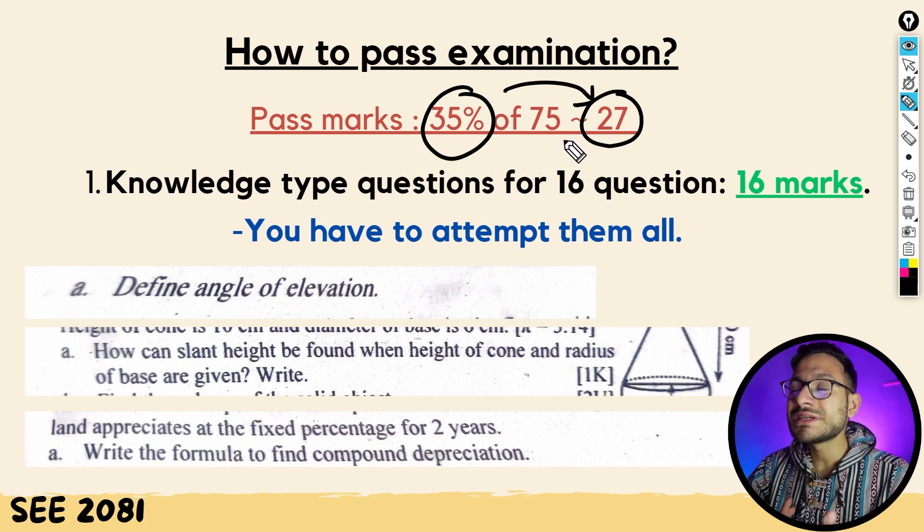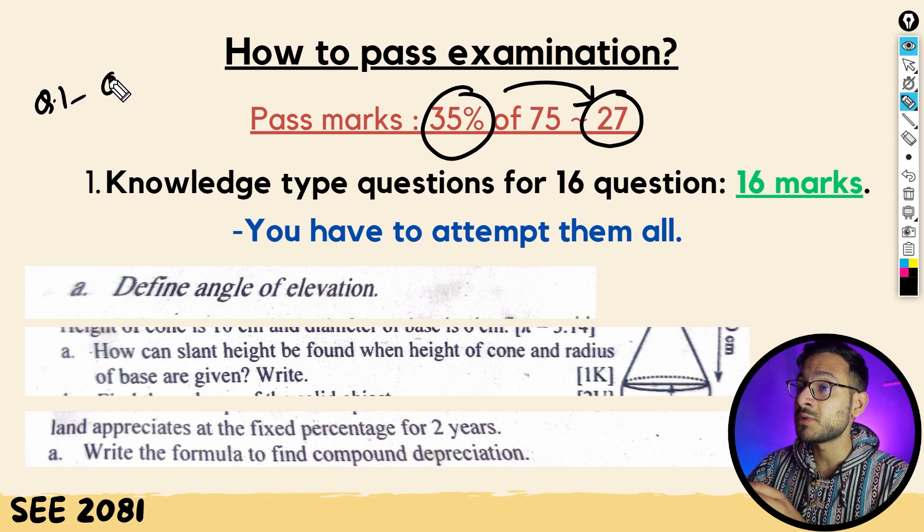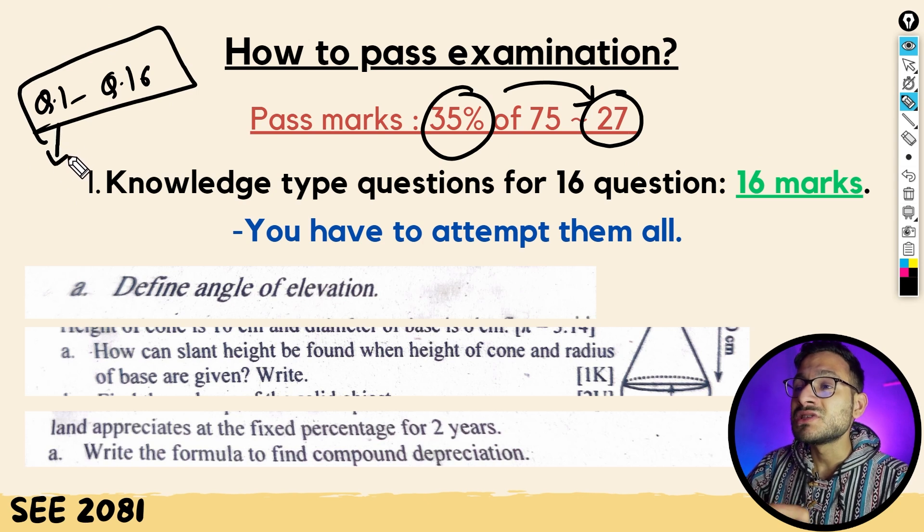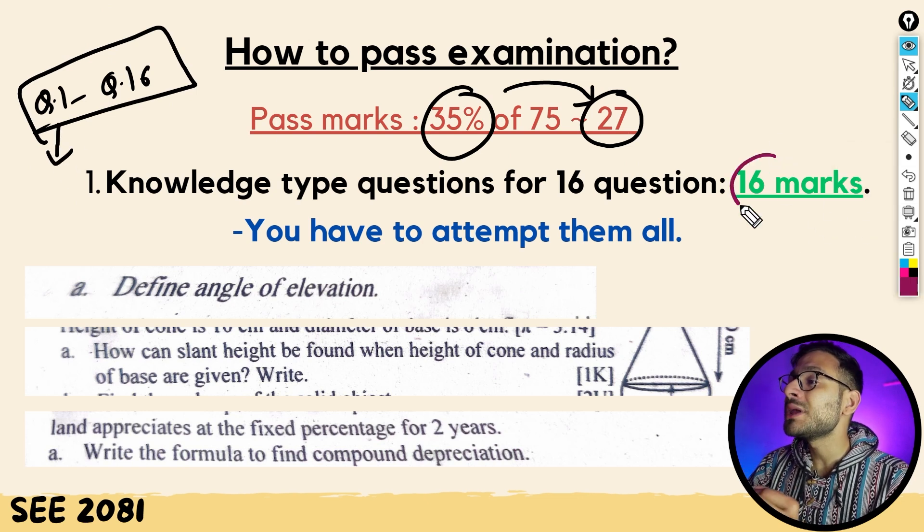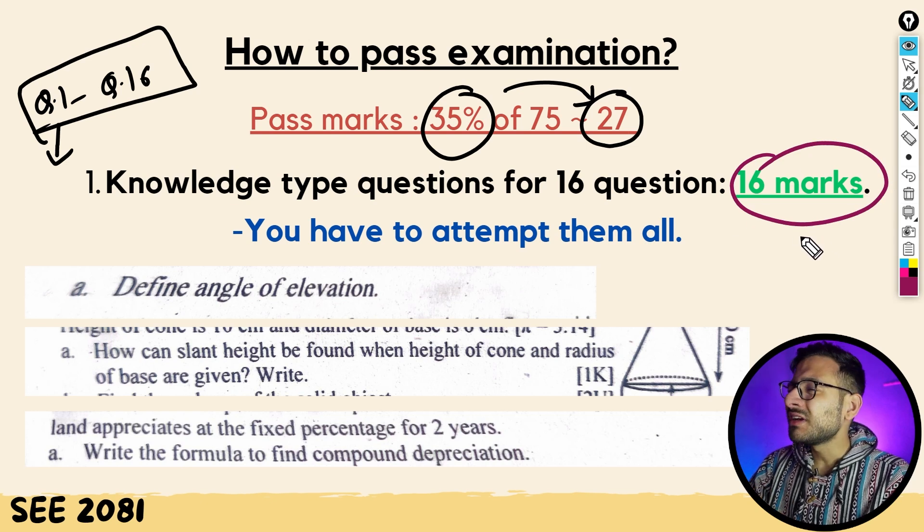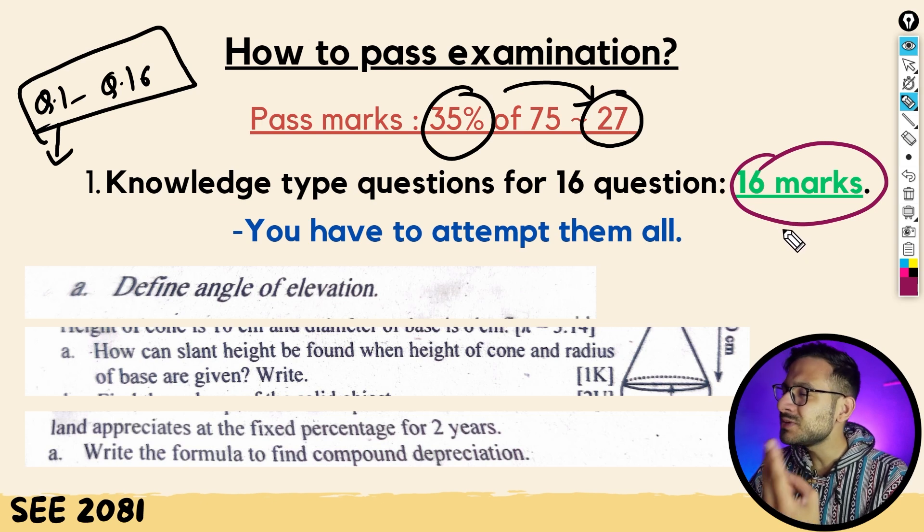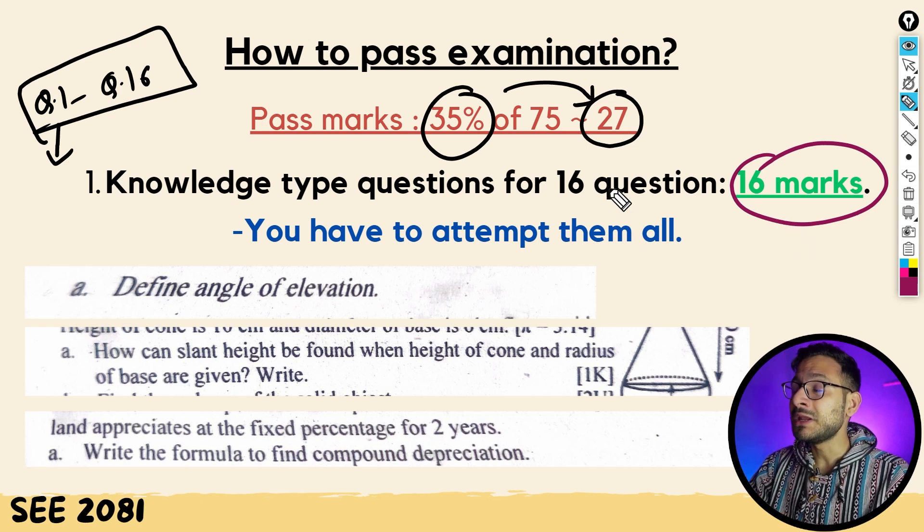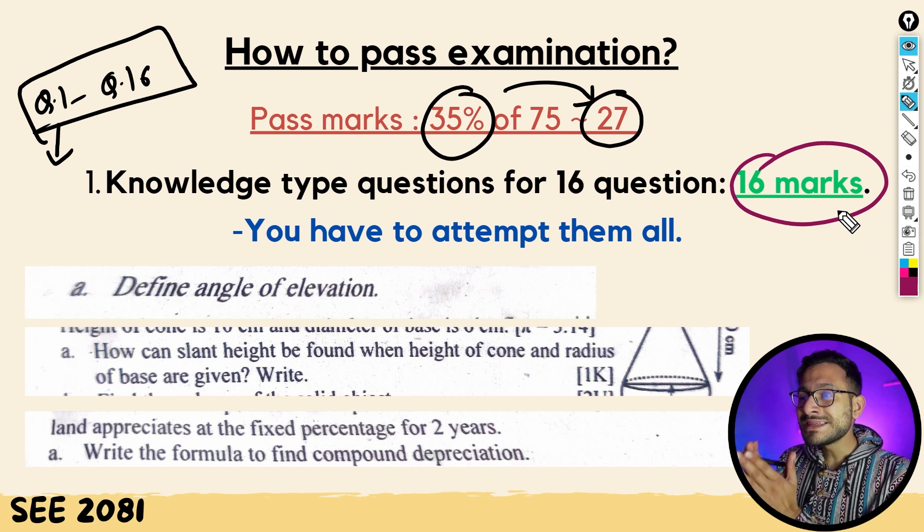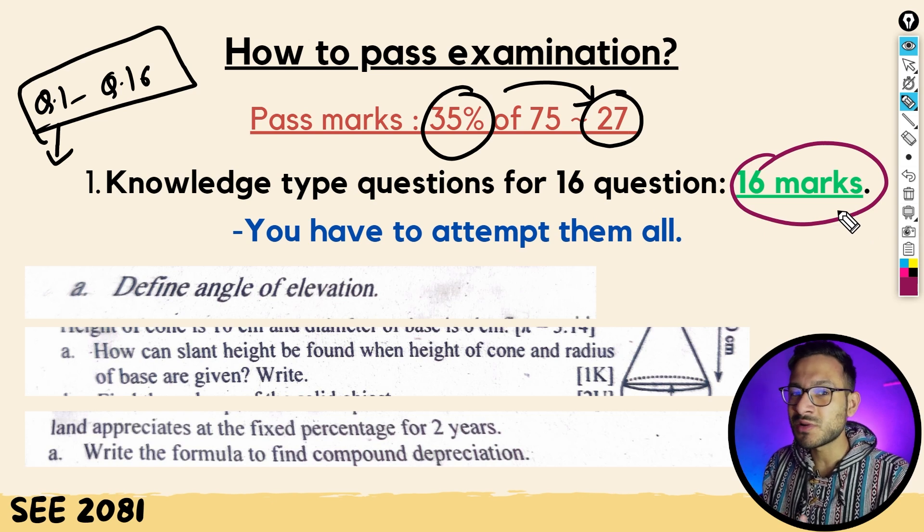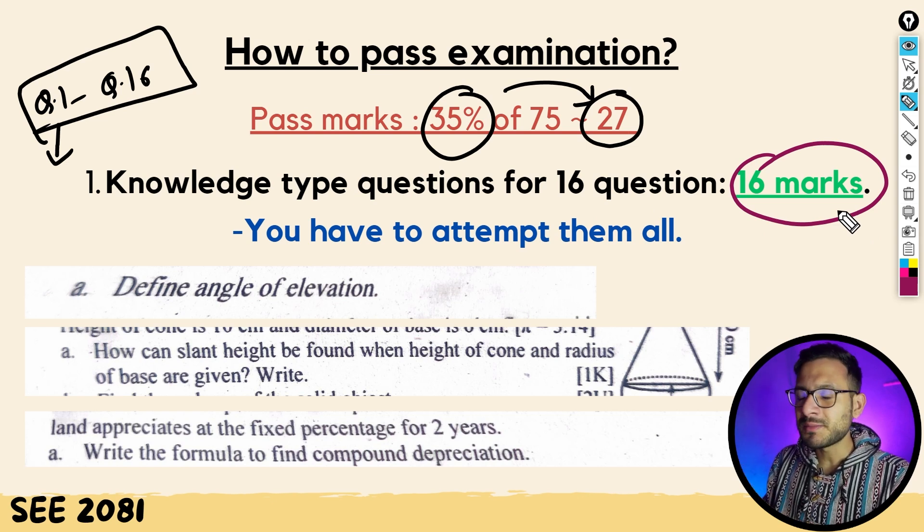First point: knowledge level questions are from question number 1 to question number 16. Please, please attempt all knowledge level questions. You must make sure that whether it's a definition in the first question or a formula in the second question, you attempt all of them.